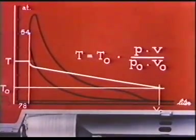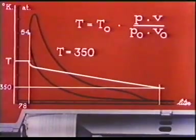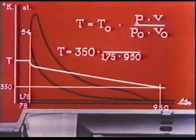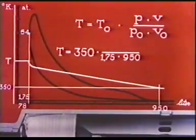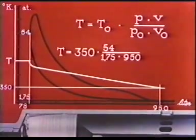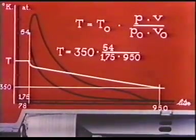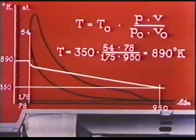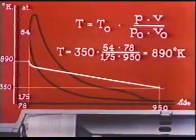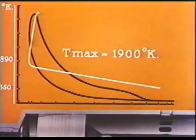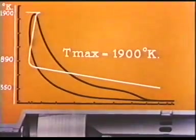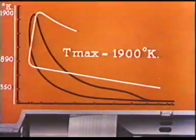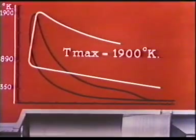Substituting the initial temperature, 350 degrees Kelvin, the initial pressure, 1.75 kilograms per square centimeter, the initial volume, 950 liters, the pressure in top position, 54 kilograms per square centimeter, and the compression volume, 78 liters, we find the temperature to be 890 degrees Kelvin. The highest temperature occurs at the cessation of combustion. It is here found to be 1,900 degrees Kelvin. In this way, the whole of the temperature curve may be calculated, right up to the moment when the exhaust valve opens.